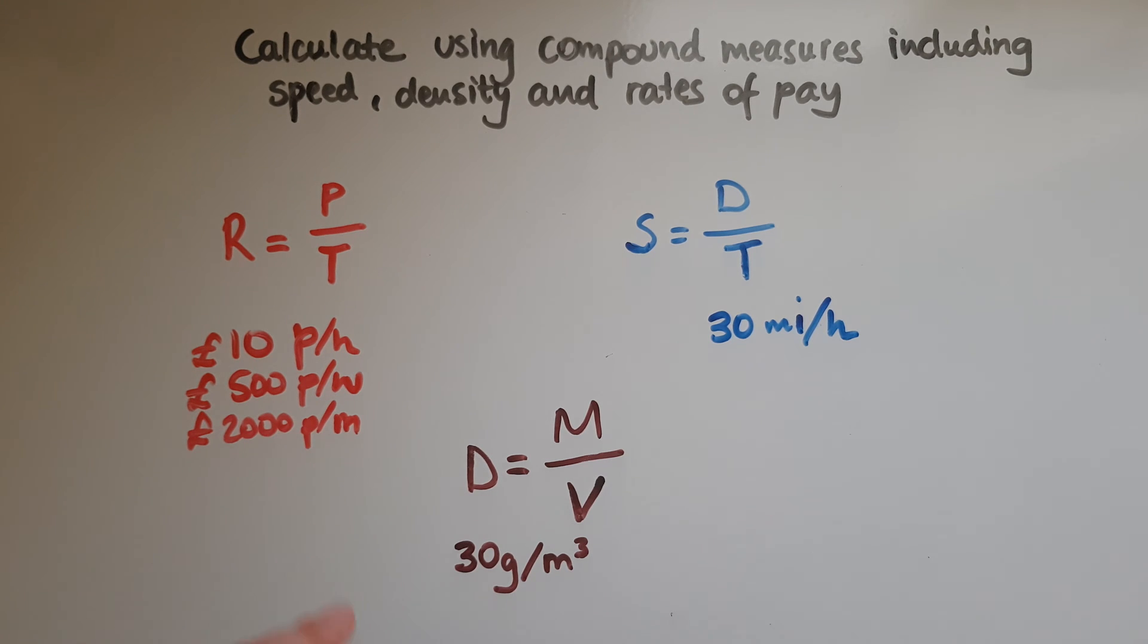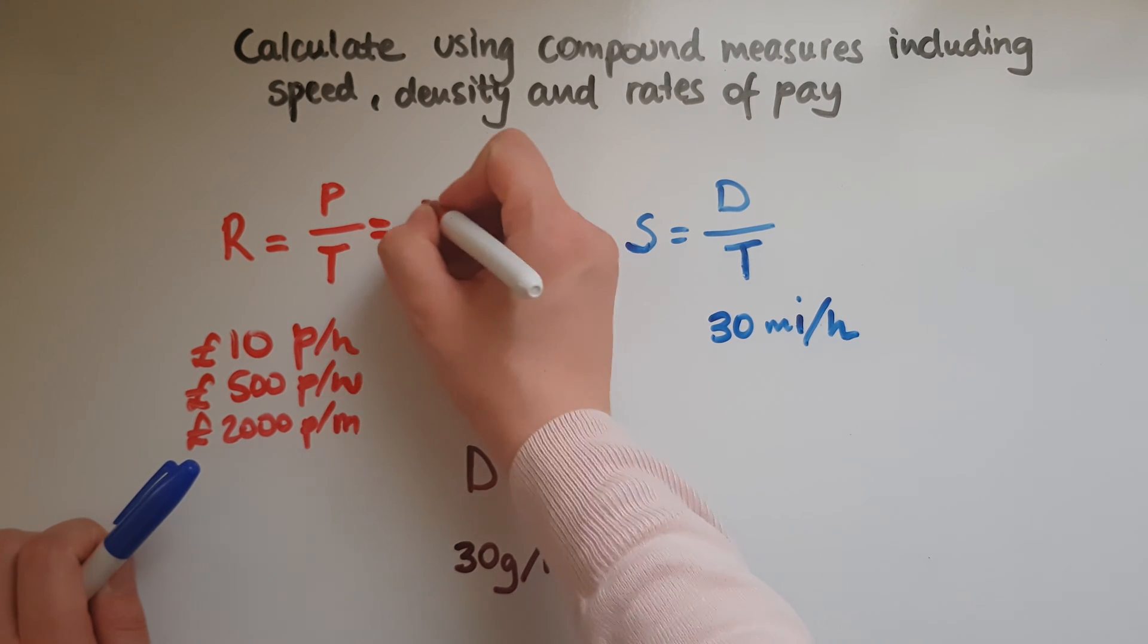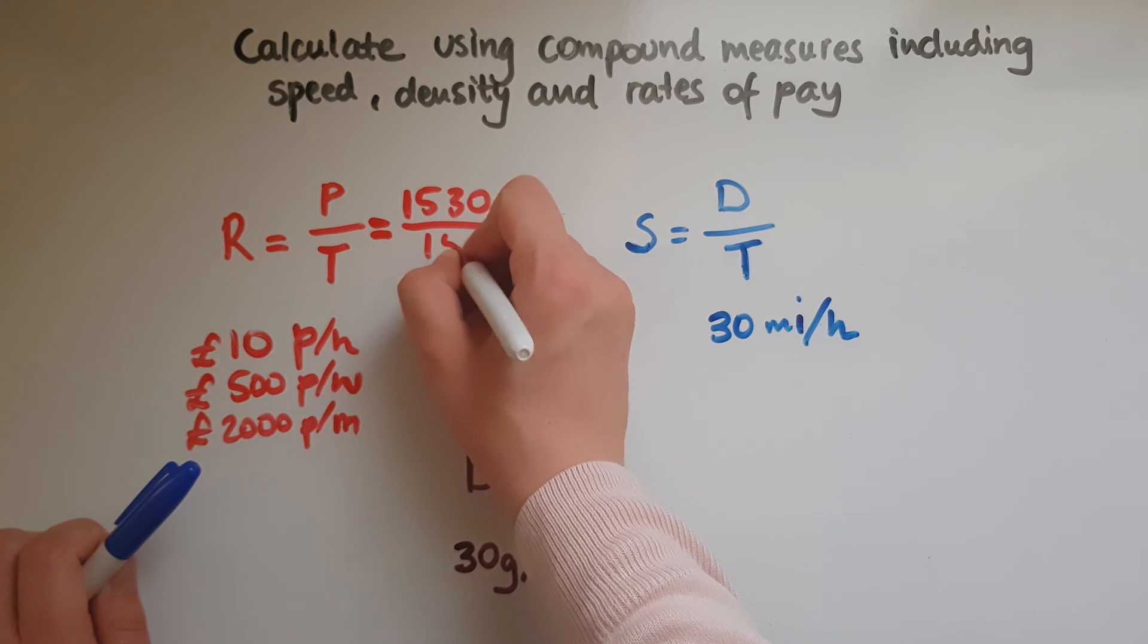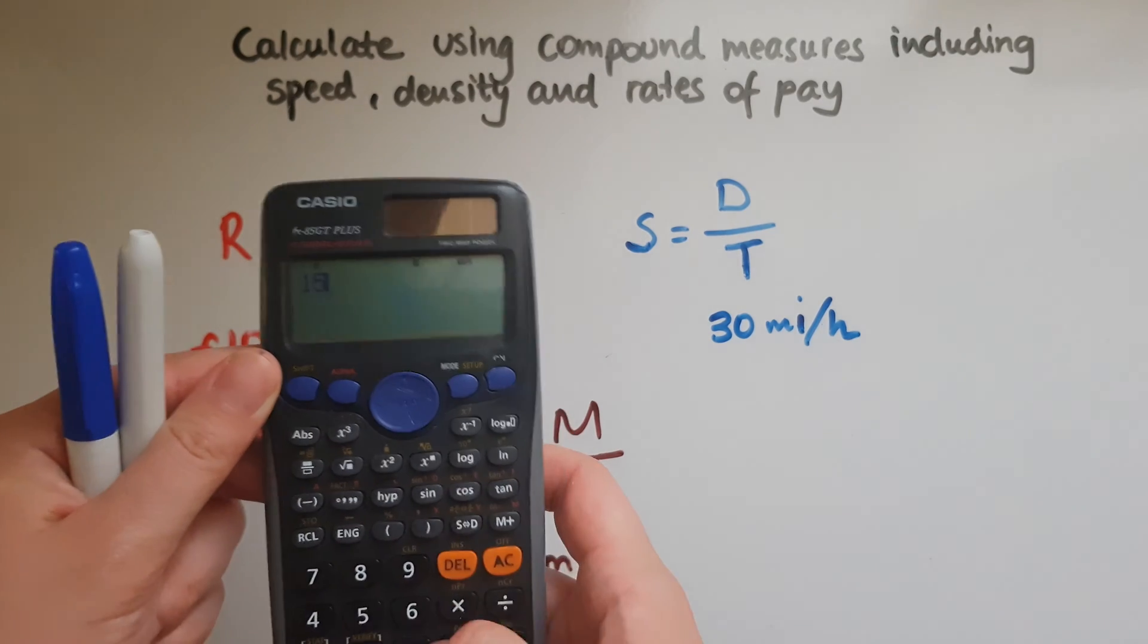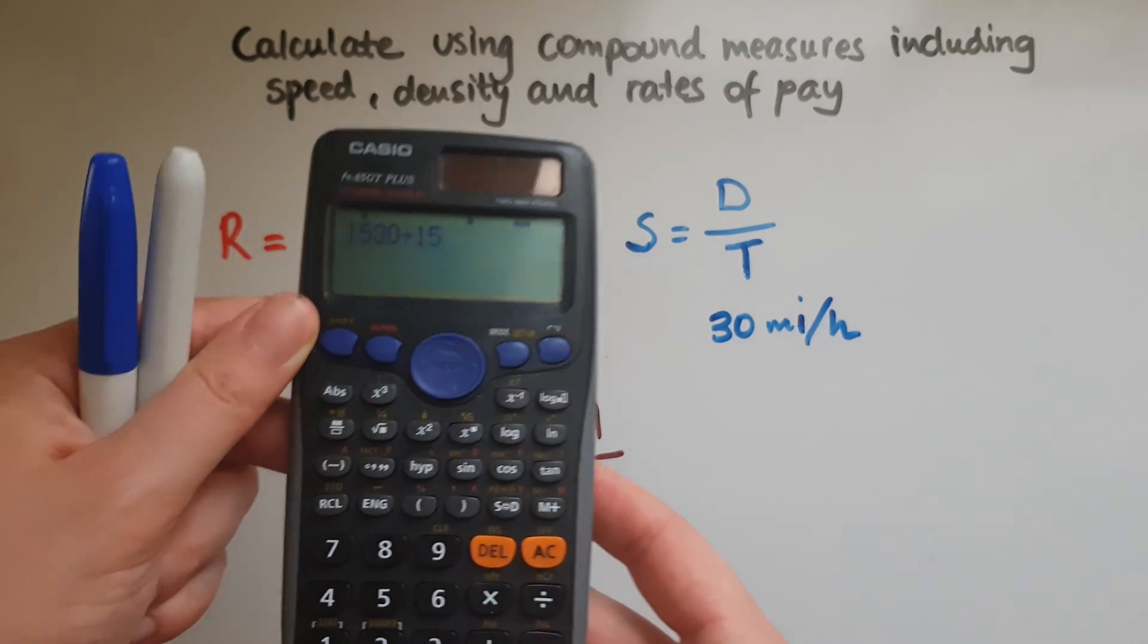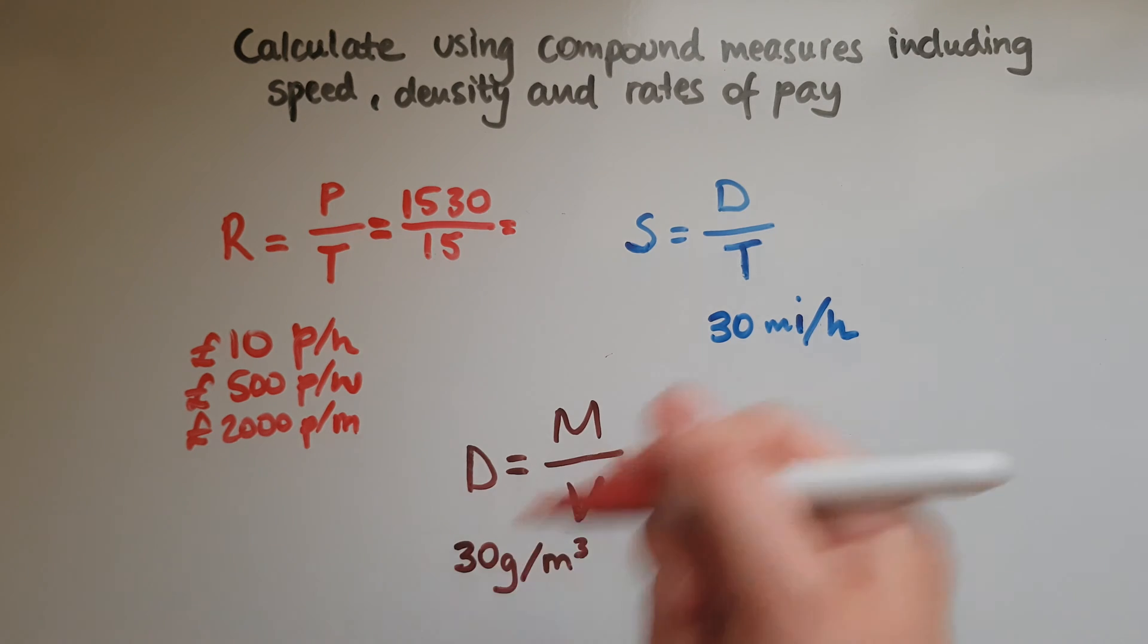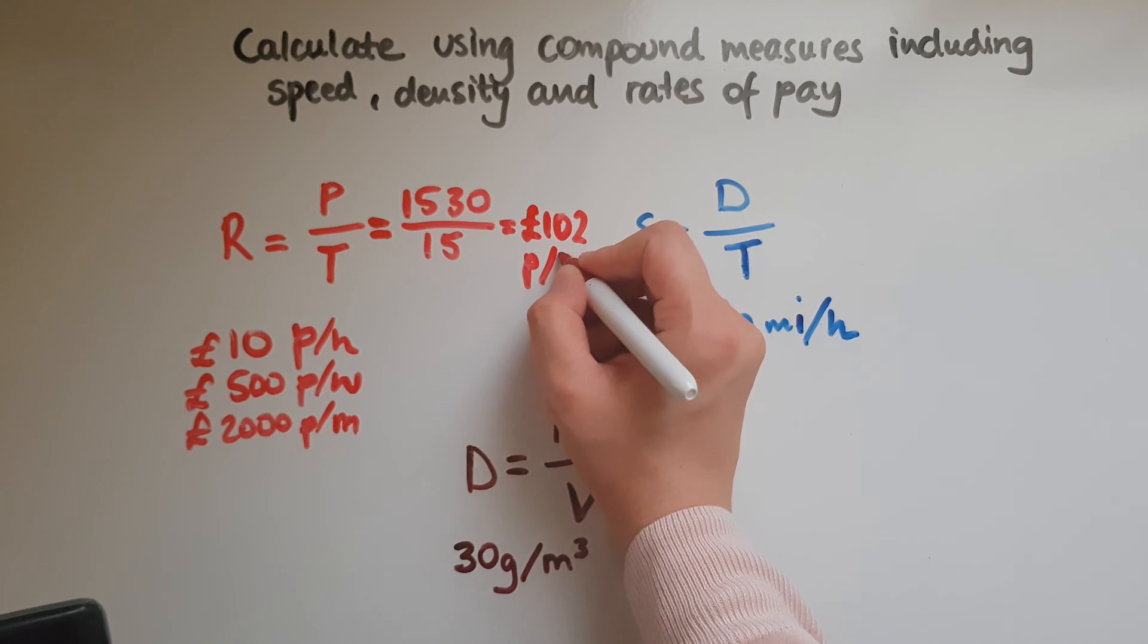So to illustrate with an example, if somebody earns £1530 for 15 hours, then the way that we'd work it out would be by dividing £1530 by 15. And that gives us £102. So that is £102 per hour.